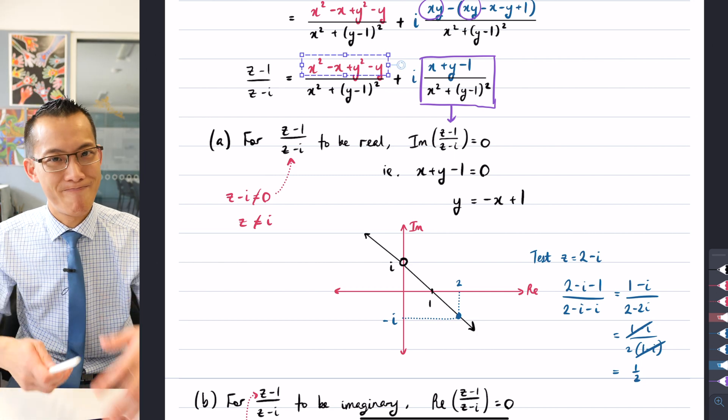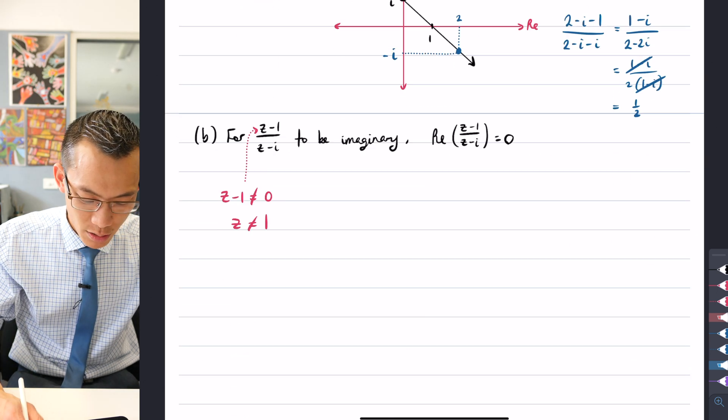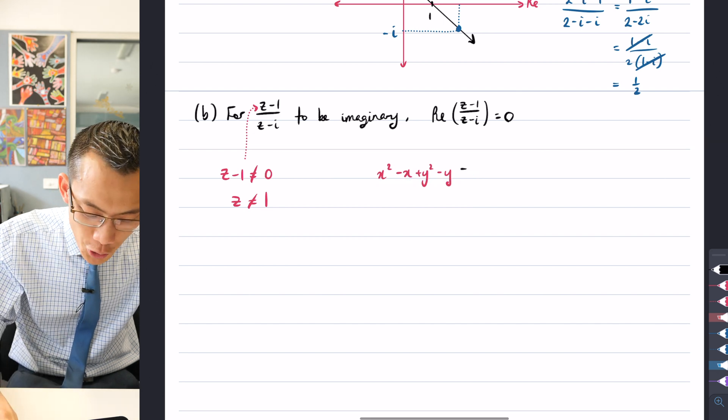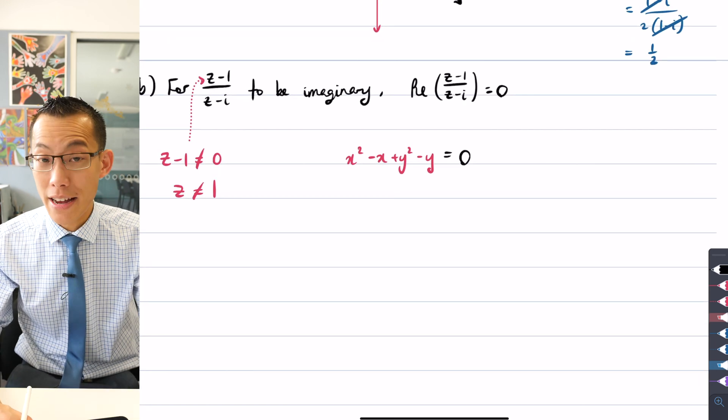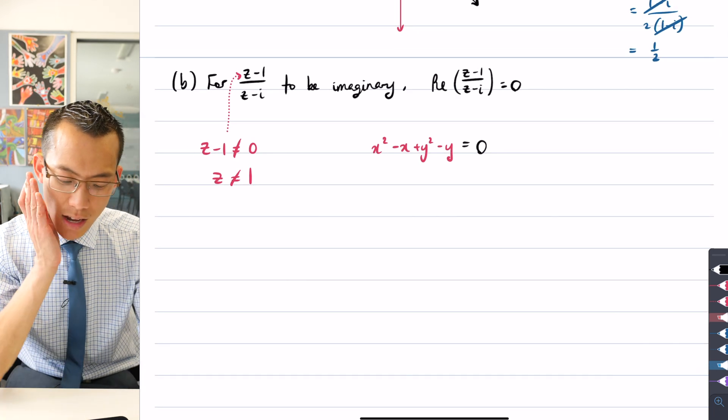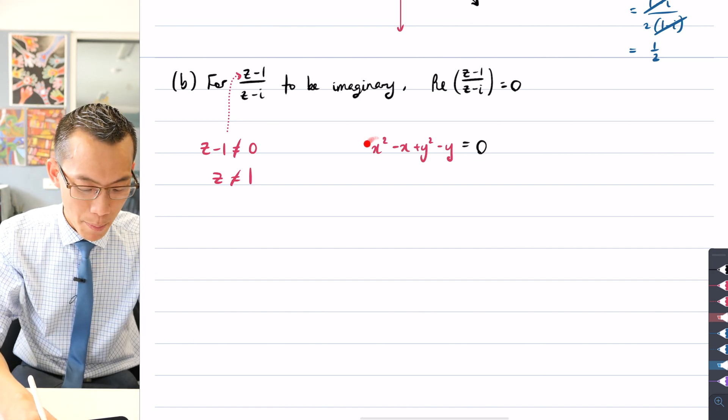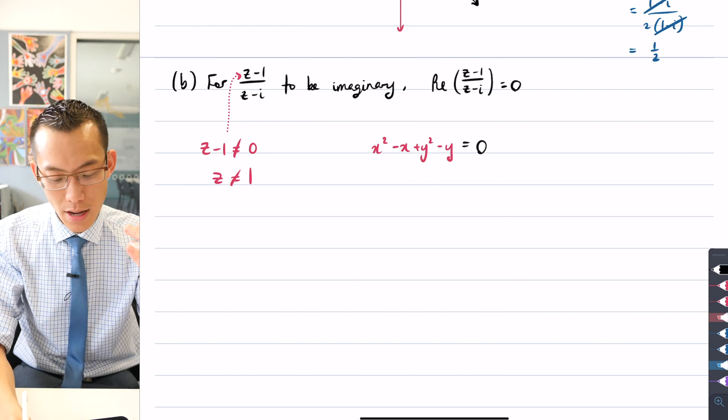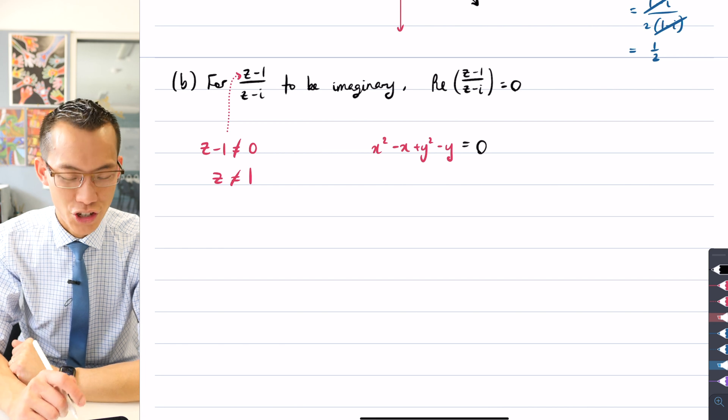You remember, if the numerator is zero, the whole thing is equal to zero. So I'm going to take this, and so long as I solve for this being equal to zero, and note my other discontinuities from before, I should get the right locus. What shape is this? Well, it's not immediately obvious, but I do notice that there's a positive x squared and there's a positive y squared. So I think I should complete the square.